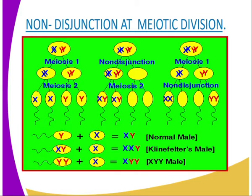Symptoms of Klinefelter syndrome in males include infertility, which is caused by lack of sperm production. They also have underdeveloped testes and reduced facial hair — meaning the face may lack a beard. They are usually taller than average with signs of obesity. Persons with the XX chromosome constitution are females who appear relatively normal in most characteristics.